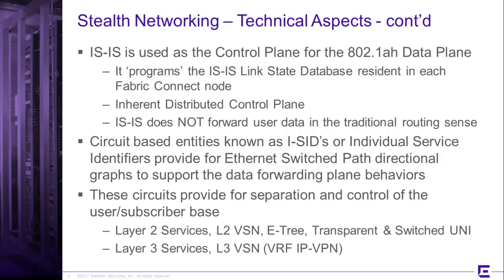User data moves through entities known as ISIDs, or Individual Service Identifiers. They provide Ethernet switch path directional graphs to support the data forwarding plane behaviors at the FabriConnect level. These circuits provide separation and control of the user subscriber base. There are two types: Layer 2 and Layer 3. In the hands-on video we went through L2VSN, and future videos will cover eTree, transparent UNI, and switched UNI — all hands-on examples in upcoming series.